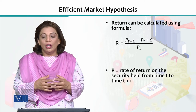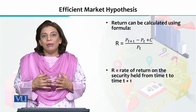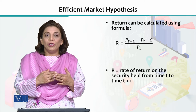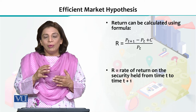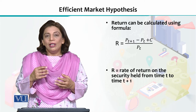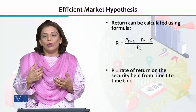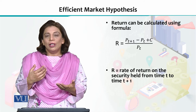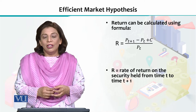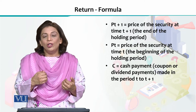If we want to determine the value of the return according to the Efficient Market Hypothesis, it can be given by a formula. It is basically the difference between the future price of that particular security minus the current price of the security, and then we add the cash payments expected from that security in the form of dividends or any other payments. Here, capital R is the rate of return on the security held from time period T to T plus 1.